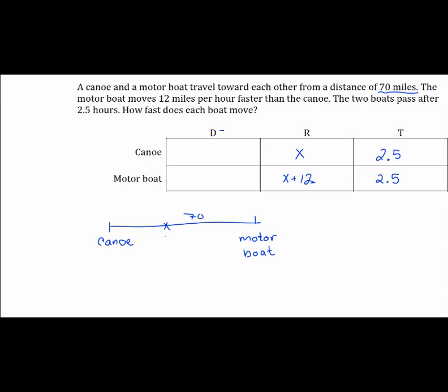So what we're going to do instead is fill in our distance column using the relationship distance equals rate times time. I'm going to take the entry for rate of x and the entry for time of 2.5 and multiply those together to get 2.5x. For the motorboat, it's 2.5 times (x + 12), and I need to make sure to put that x + 12 in parentheses so that the 2.5 gets multiplied by the entire x + 12.